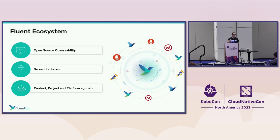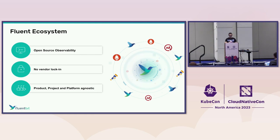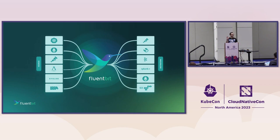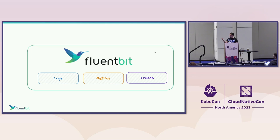Many vendors pitch replacing everything you have with a magic bullet solution — it doesn't work like that. In production, you'll find multiple types of databases and different agent collectors. You need a solution that integrates with what you already have, because migrating infrastructure tools is expensive in time and investment. Fluent Bit interoperates with Prometheus, OpenTelemetry, Fluentd, and many others. At a high level, it's a telemetry agent connecting many sources to many destinations with processing in the middle.